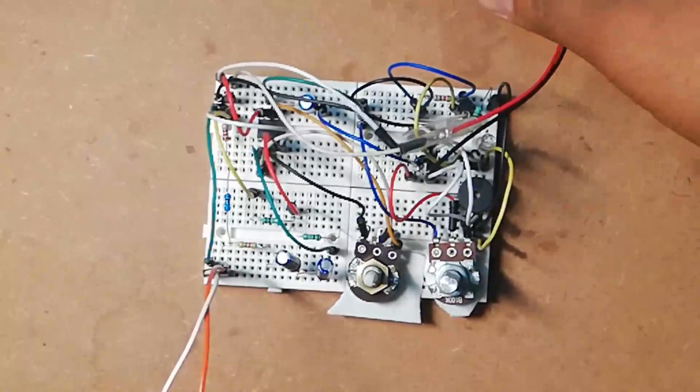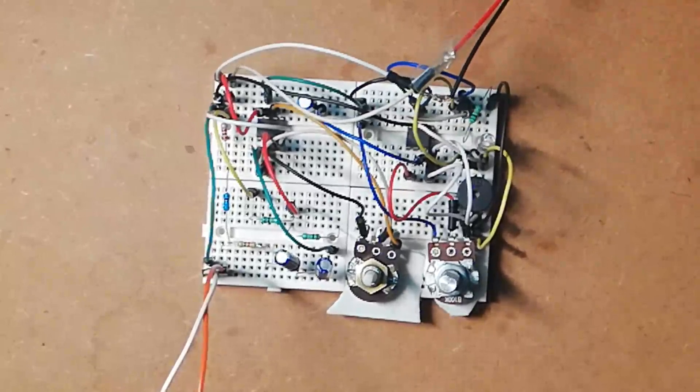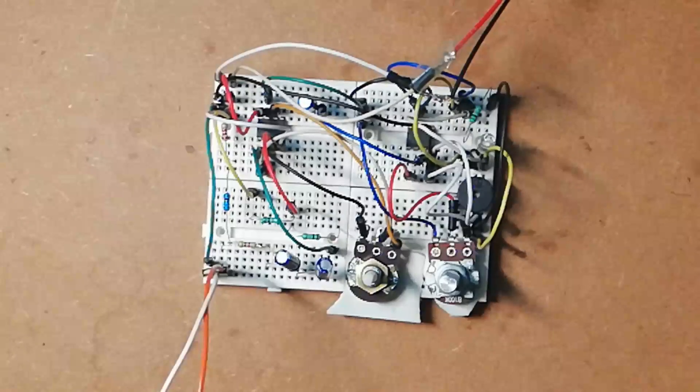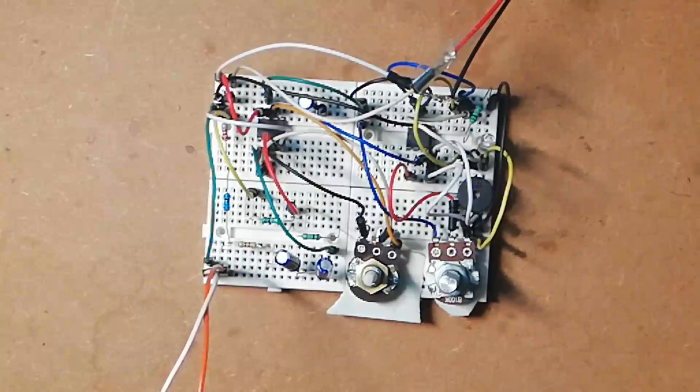Here I had wired all the components as shown in the circuit diagram or we can also say that this is my prototype of sound detector circuit using 741 IC.